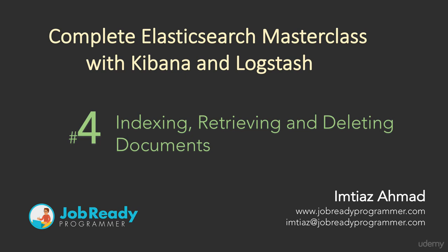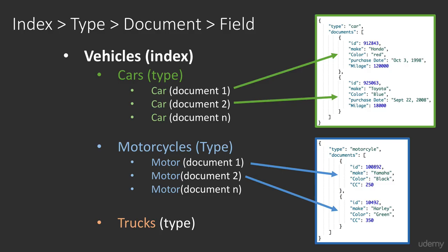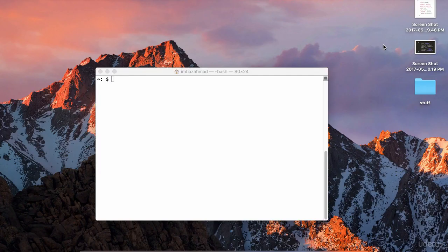In this lecture, we're going to get practical and populate Elasticsearch with some data. In the previous lesson, I gave an example of the Vehicles Index. We have three different types of vehicles, such as cars, motorcycles, and trucks. These are the different types. So now, we'll take that example further and load certain documents into Elasticsearch. And by the way, this lecture is going to be the last time you hear me use the word insert.